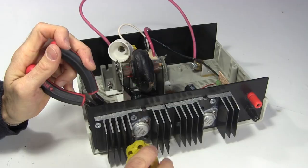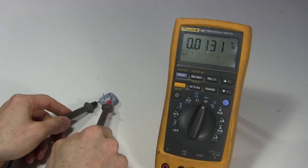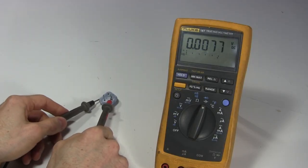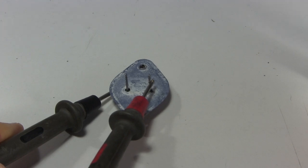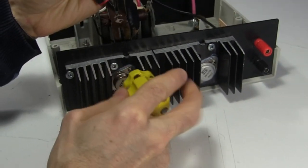I then unbolt the second transistor and test it. And yay, it's shorted inside. If there's only one broken component, then this is it. So I bolt in a new transistor.